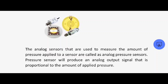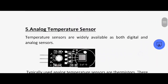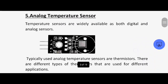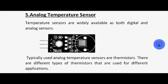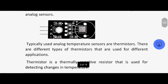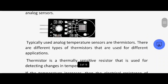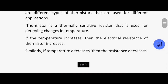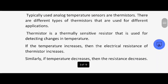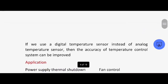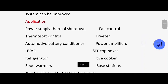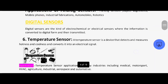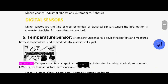Next one is the analog temperature sensor. Typically used analog temperature sensors are thermistors. There are different types of thermistors used in different applications. If the temperature increases, the electrical resistance of the thermistor increases. The temperature sensor is a device that detects and measures hotness and coolness and converts it into an electrical signal.